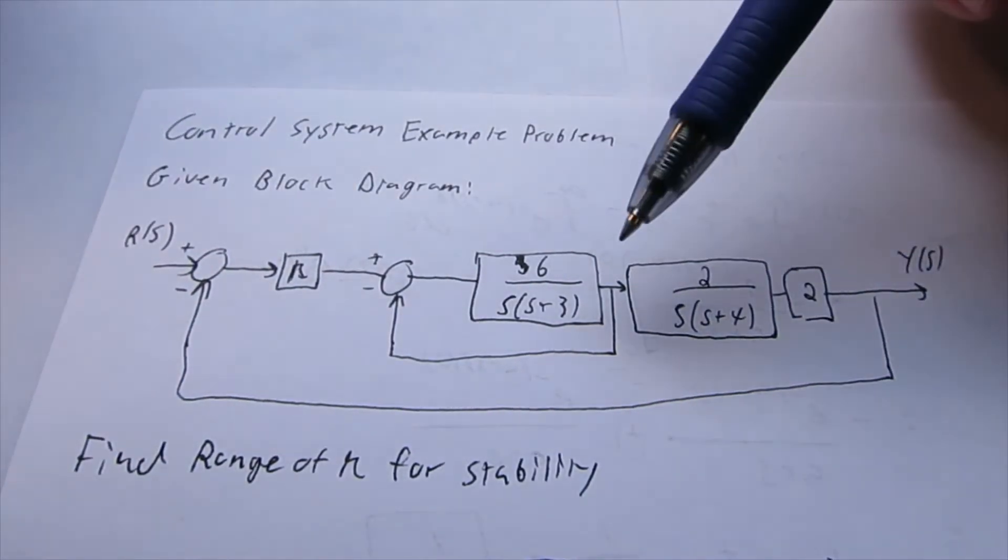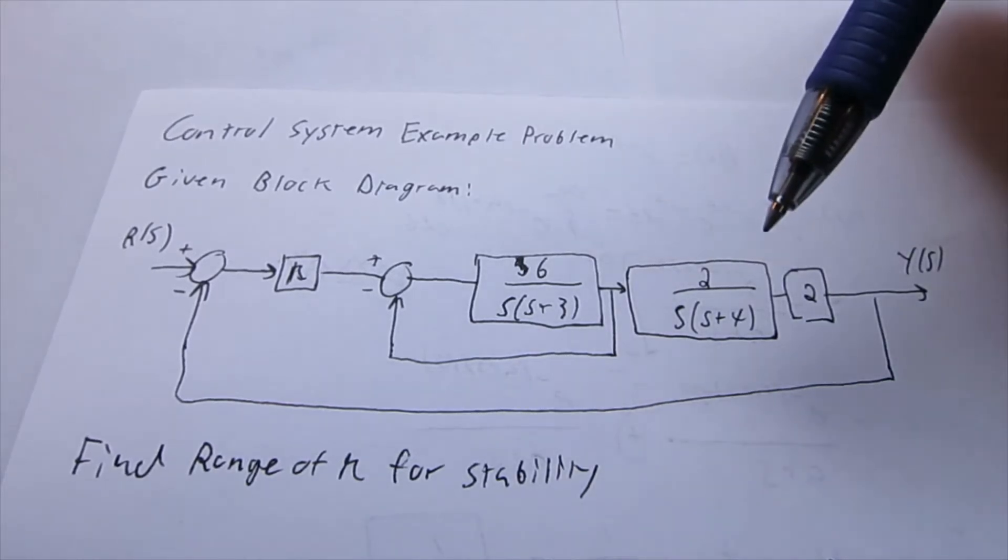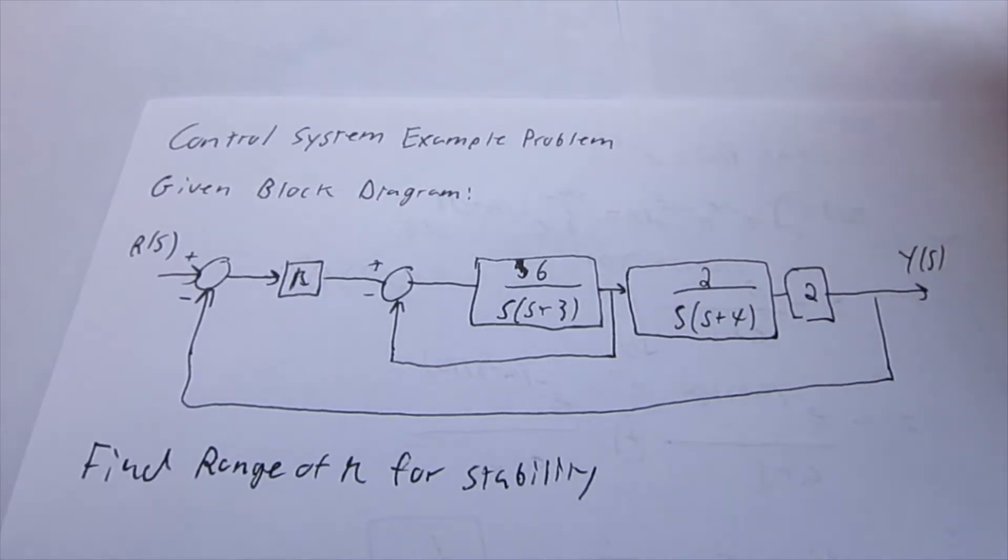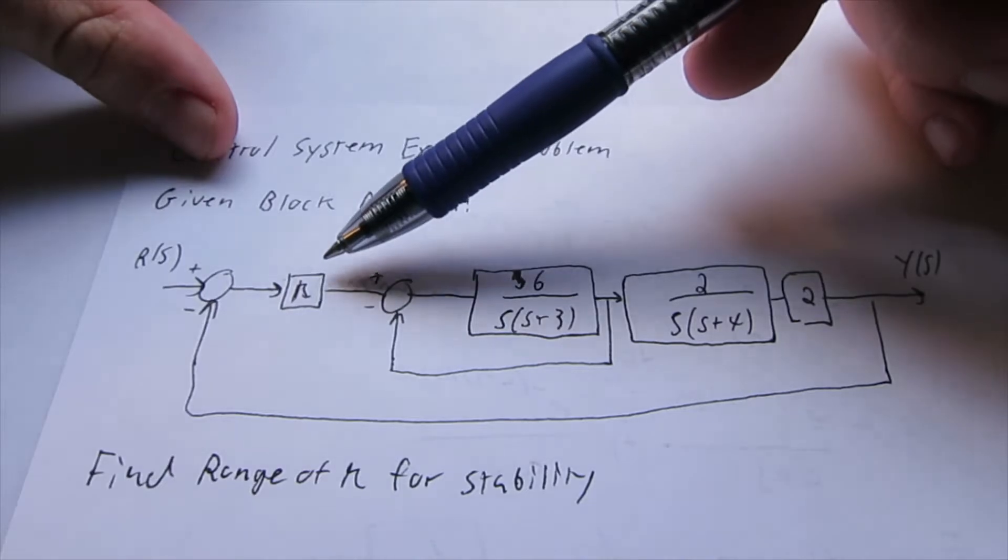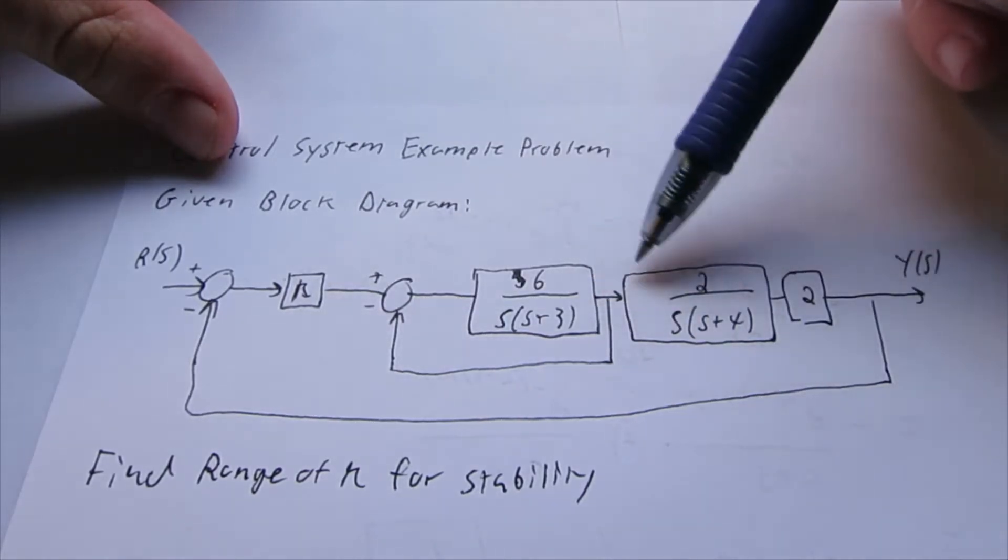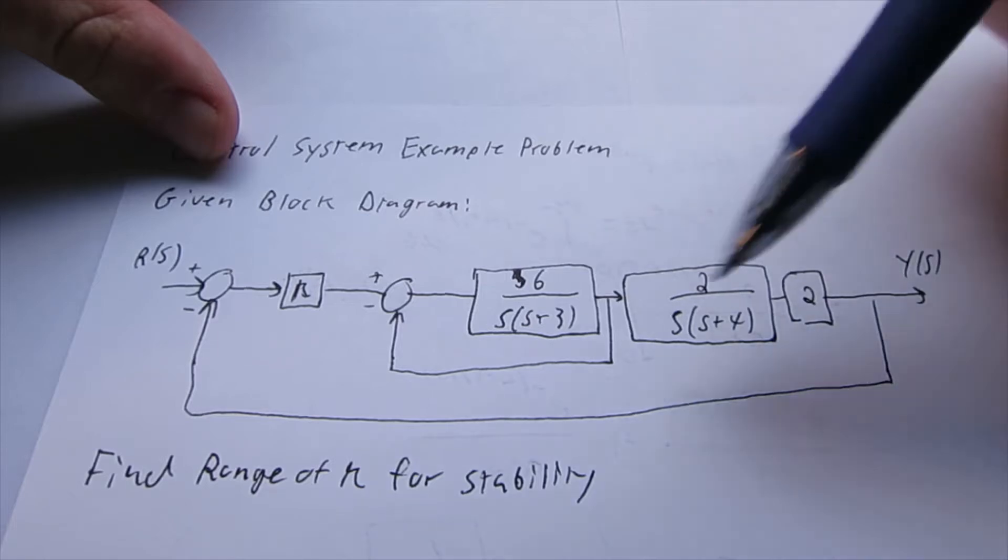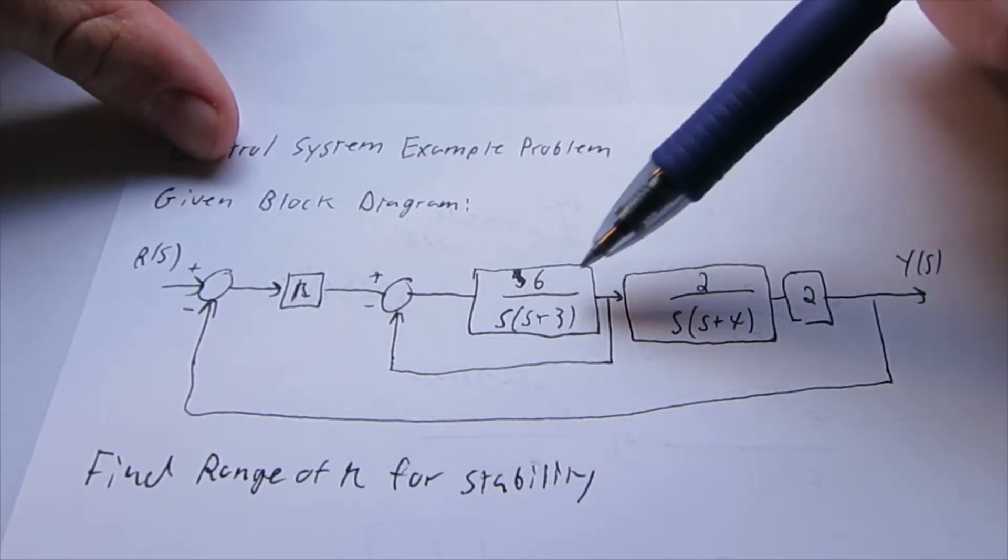Hello. In this video, we're going to be doing an example problem that deals with a couple topics in control systems engineering, those topics being Routh-Hurwitz criterion and block diagram reduction. So given this block diagram right here, we have a controller of K, a couple of plants of different transfer functions, and our goal is to find the range of K for stability.